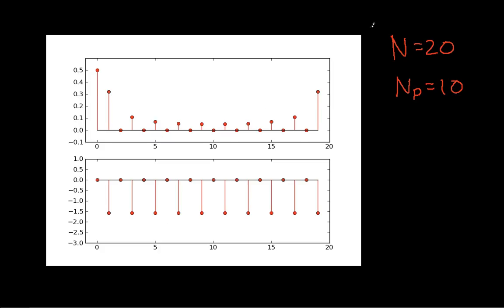The goal of this example was to show you how to work a discrete-time Fourier series and show you, for the case of a periodic square wave, how you can get a formula that's generally useful. Hopefully this has been helpful. Thanks for watching.